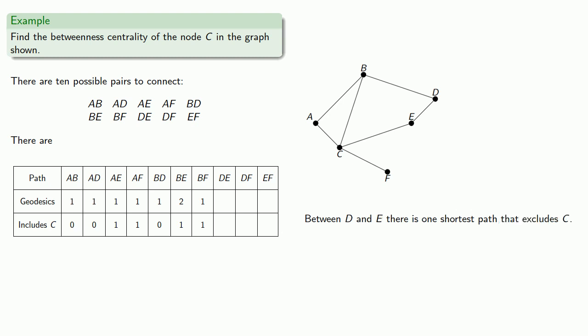Between D and E, there's one shortest path that excludes C. Between D and F, the shortest path goes through C. Between E and F, there's one shortest path that includes C.